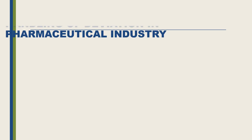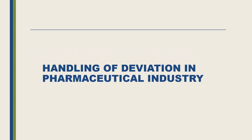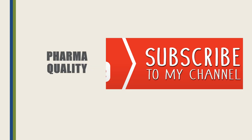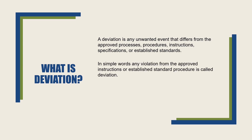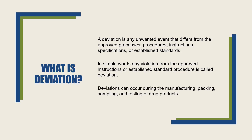Hello friends, I hope you like my videos and it's helpful to enhance your knowledge. If you have any questions you can ask me in the comments. In this video we will discuss the handling of deviation in the pharmaceutical industry. My YouTube channel name is PharmaQuality, so please like, comment and subscribe. A deviation is any unwanted event that differs from the approved processes, procedures, instructions, specifications or established standards. In simple words, any violation from approved instructions or established standard procedure is called a deviation. Deviation can occur during the manufacturing, packing, sampling and testing of drug products.